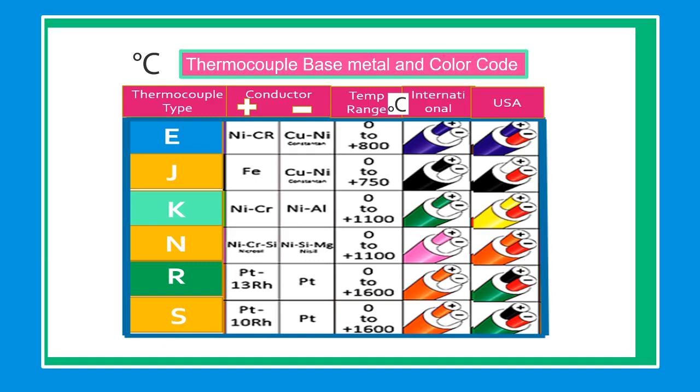Below are the details of each type of base metal thermocouple. Type E, thermocouple having a chromel as a positive leg and constantan as a negative leg. Chromel having a percentage of 10% nickel while constantan has 45% nickel.